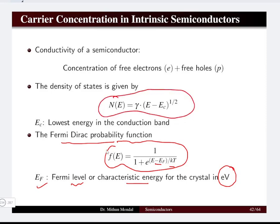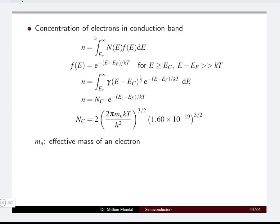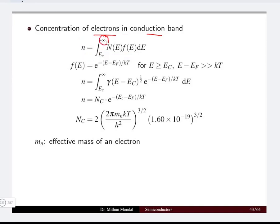First, let us calculate the electrons in the conduction band, then we will move to the calculation of holes. The electrons present in the conduction band are found by integrating from the lowest energy in the conduction band to infinite energy, combining the density of states with the Fermi-Dirac function. For the condition that E is greater than Ec, we apply the Fermi-Dirac function.